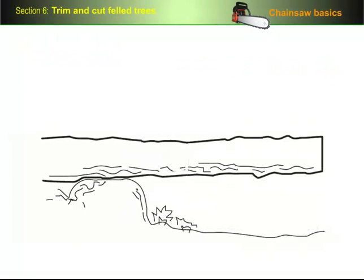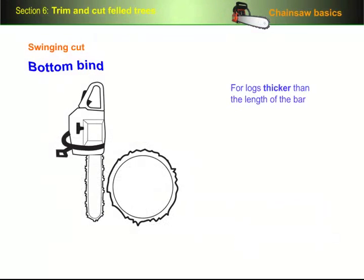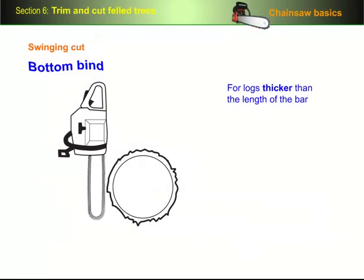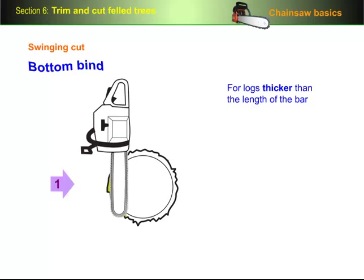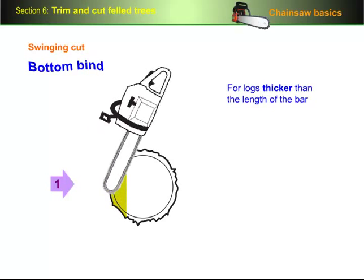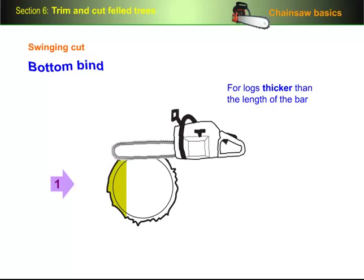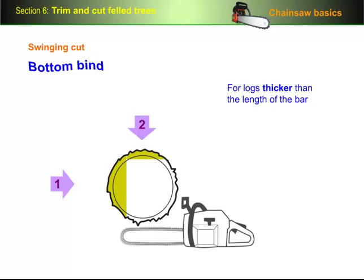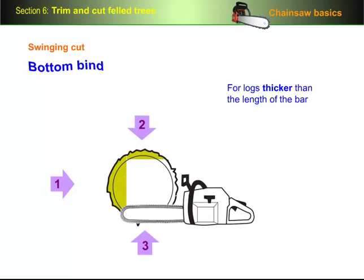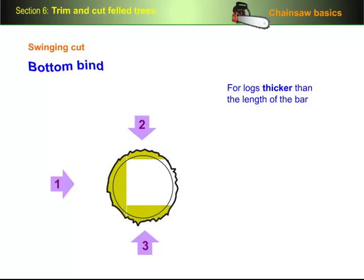In this case, you need to do a swinging cut to cope with the bottom bind. You do this by cutting upwards until you break the bind, and then down from the top to finish the cut. For logs thicker than the length of the bar, again put a cut on the opposite side of the log and pull the saw towards you, cutting down slightly as you go. Then cut from the bottom up until you break the bind, and finish by cutting down the rest of the way.